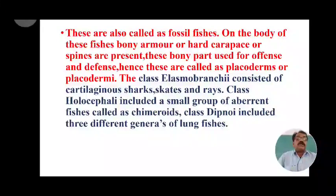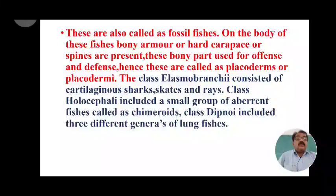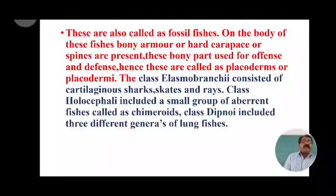The class Elasmobranchii — a surviving ancient and primitive class — consists of cartilaginous sharks, skates, and rays. The class Holocephali includes a small group of aberrant fishes called Chimeroids, including rat fish, rabbit fish, and elephant fish.